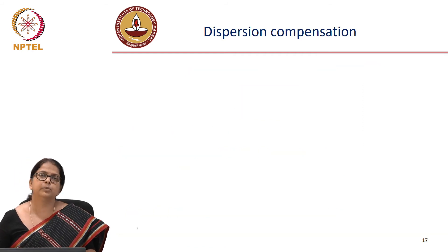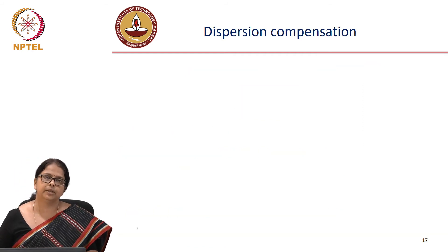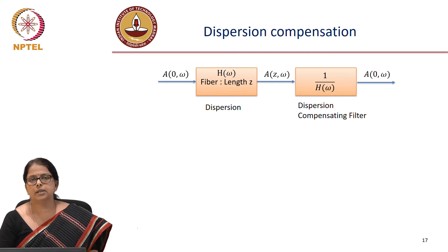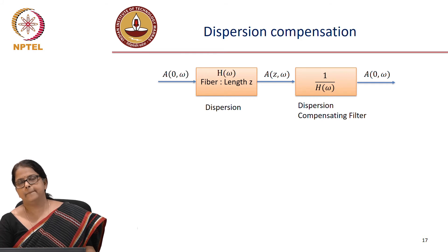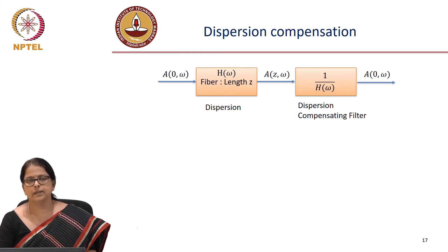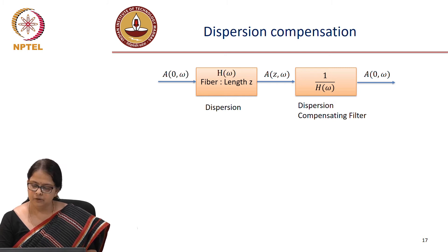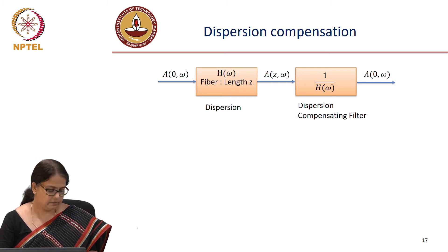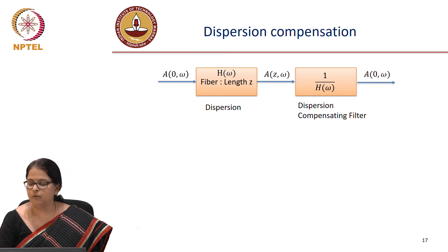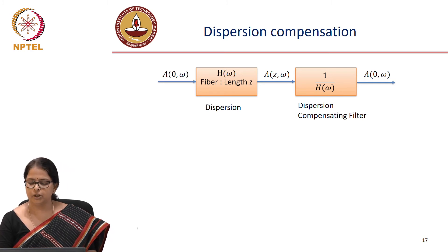How do we do dispersion compensation? If we know what H of omega is for the system, we can always invert the system — since it is a linear system — and get back the original signal. We can have a dispersion compensating filter whose frequency response is 1 over H of omega, and recover the original signal.